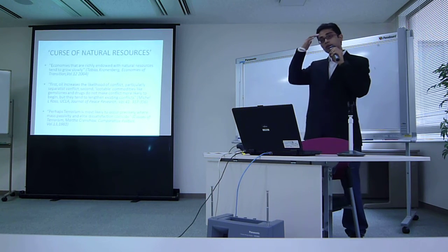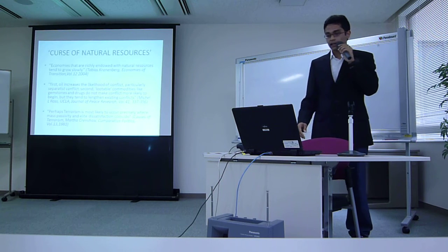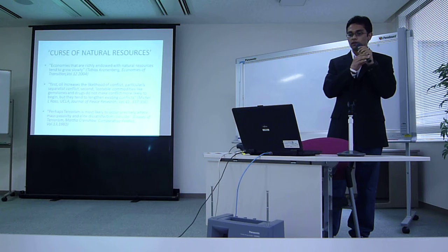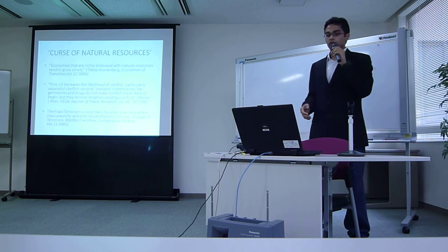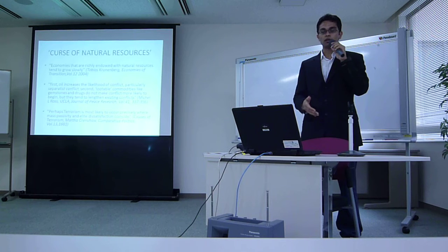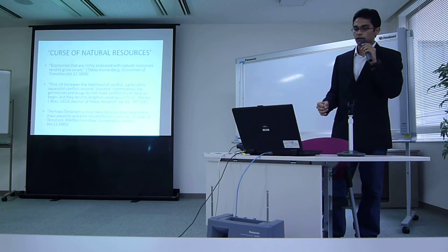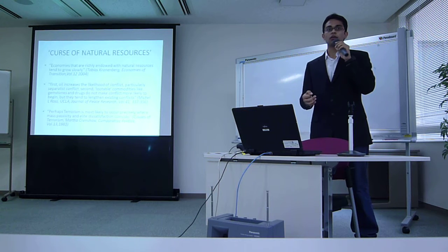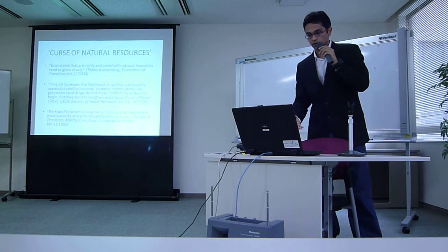The next slide talks about the curse of natural resources. According to Tobias Kronberg, economies richly endowed with natural resources tend to grow slowly. And according to Michael L. Ross, oil increases the likelihood of conflict, particularly of the separatist type. Assam and the Northeast region has a lot of oil. We've seen that East Timor and Brunei were able to separate because they had oil. Lootable commodities like gemstones and drugs do not start conflicts but tend to lengthen existing ones. The Northeast region is full of gemstones and oil, which is how separatist groups are able to pay for their expenses and for guns.